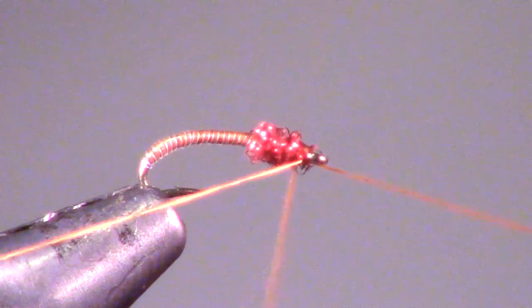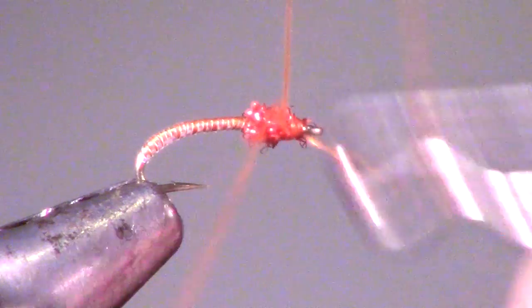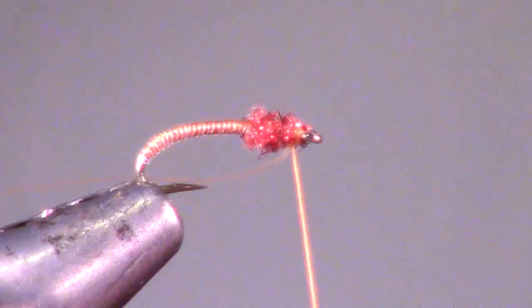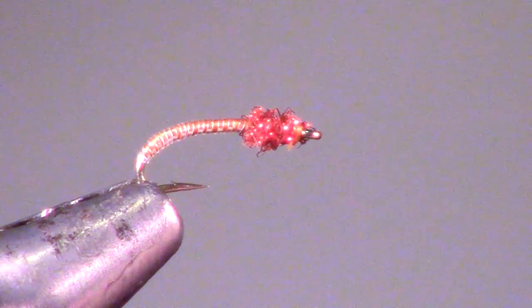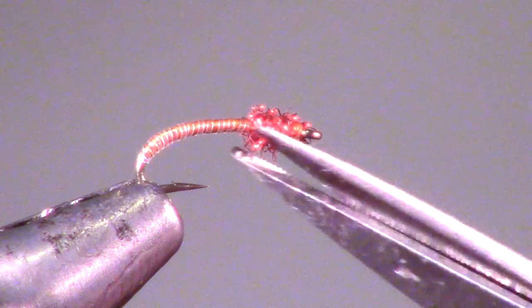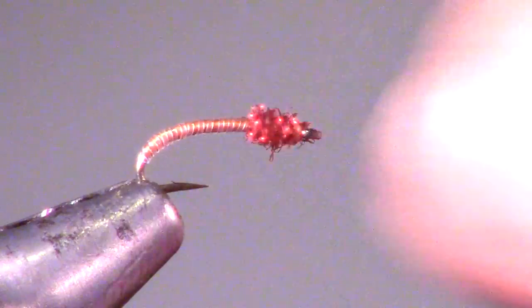Now whip finish the fly and cut off the thread. If your dubbing is sticking out a bit, you can trim the tag ends carefully.